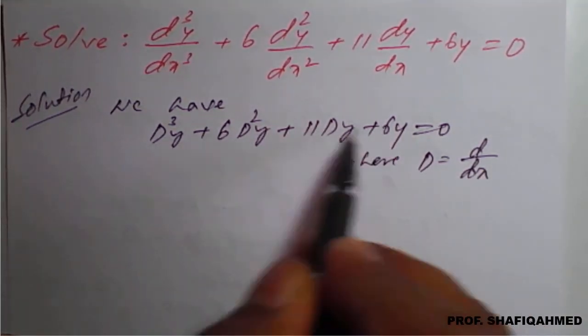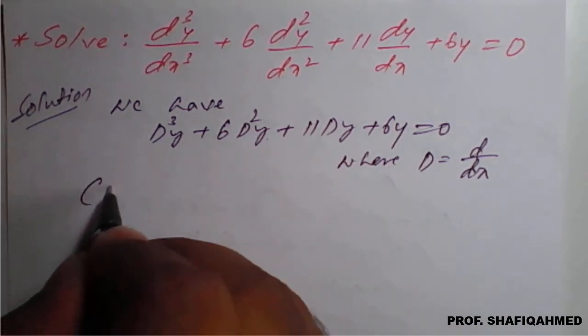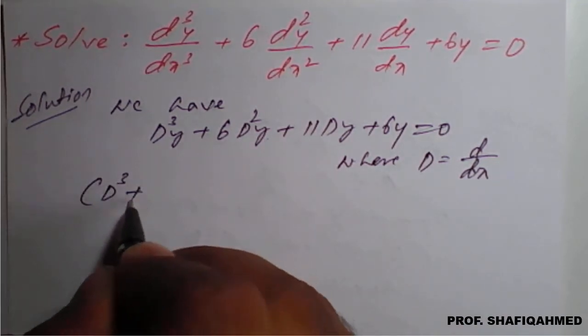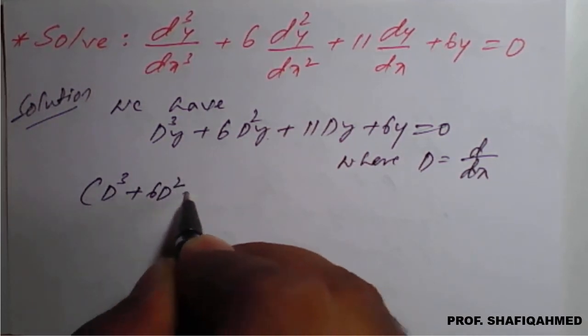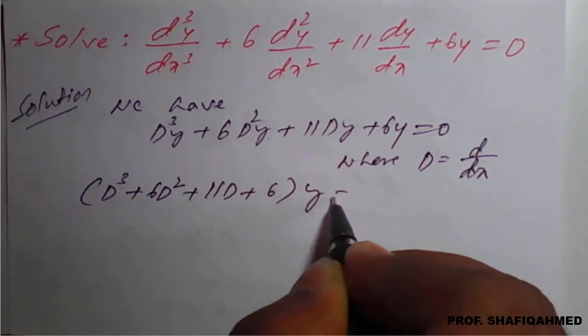Once we get this equation, you can see that y is common. So we will take that y common. We will get (d³ plus 6d² plus 11d plus 6)y equal to 0.